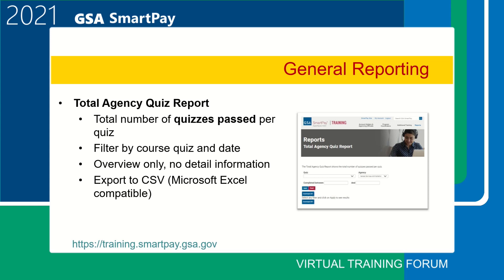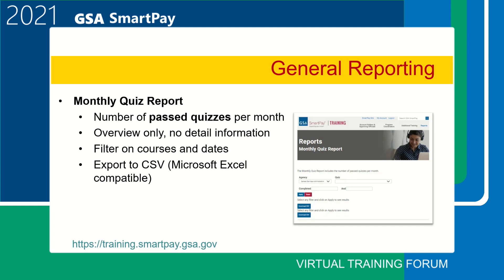The monthly quiz report includes the number of passed quizzes per month. This is overview information only with no specific user details. Initial results are for all courses, but you can filter to see results for one specific course and timeframe. This report is similar to the total agency quiz report, except it breaks it down by month. So whereas we saw a total of 4,425 passed the total account holders training in GSA from 2011 to present, we can further define those results to see, for example, six quizzes were successfully completed in January 2020 and eight in February 2020.